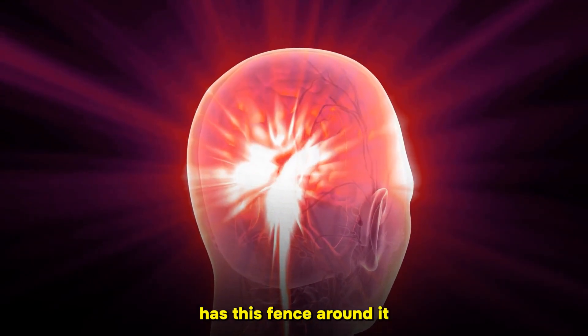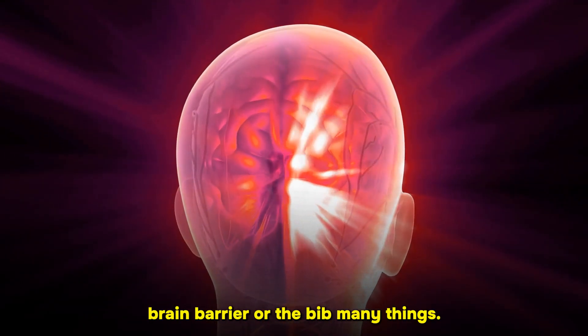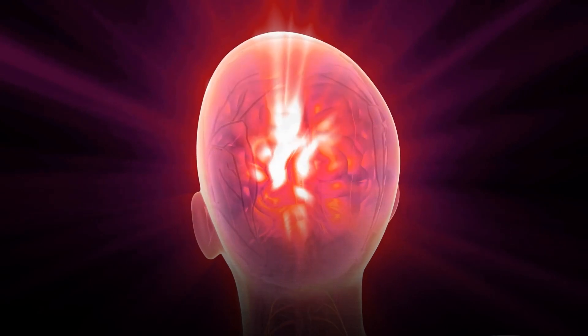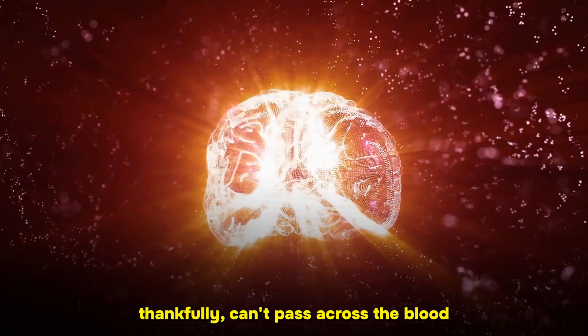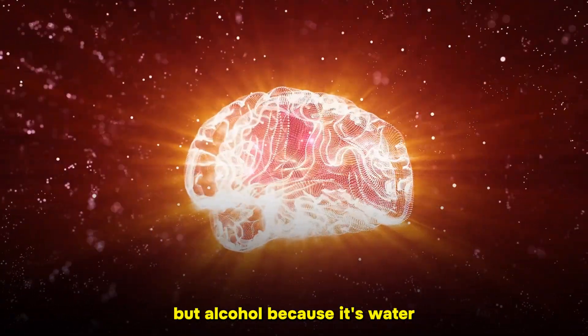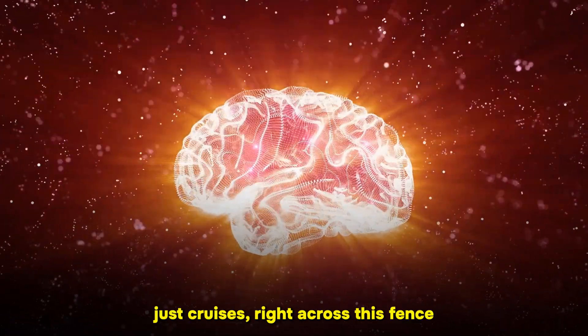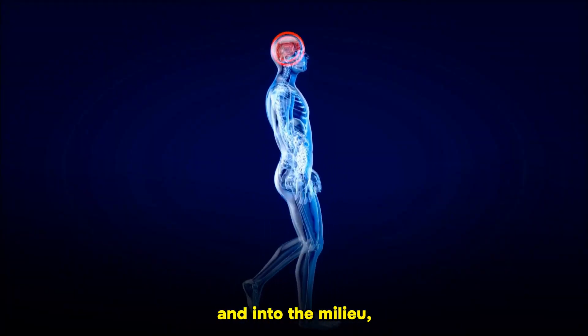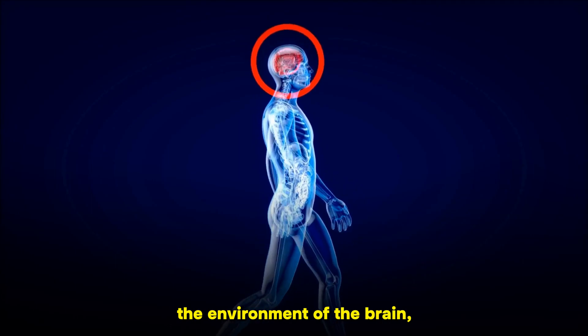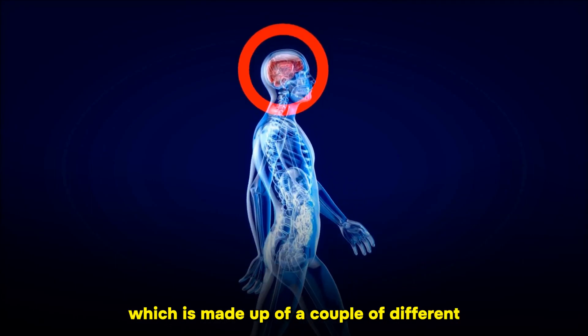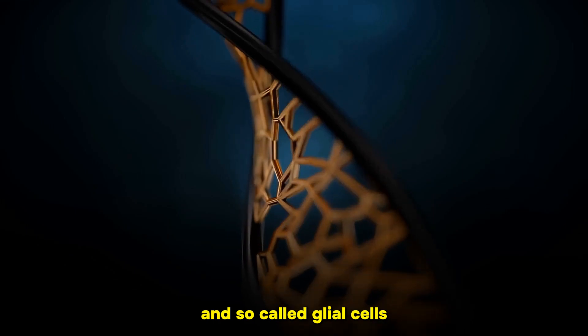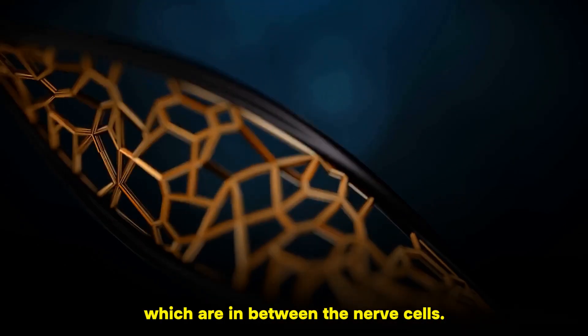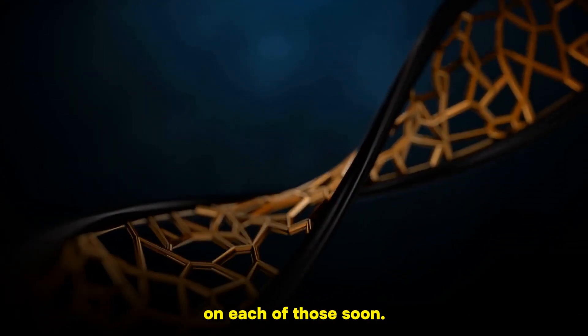The brain has this fence around it called the blood-brain barrier or BBB. Most things, thankfully, can't pass across it, but alcohol, because it's water and fat soluble, just cruises right across this fence into the environment of the brain, which is made up of neurons, nerve cells, and glial cells.